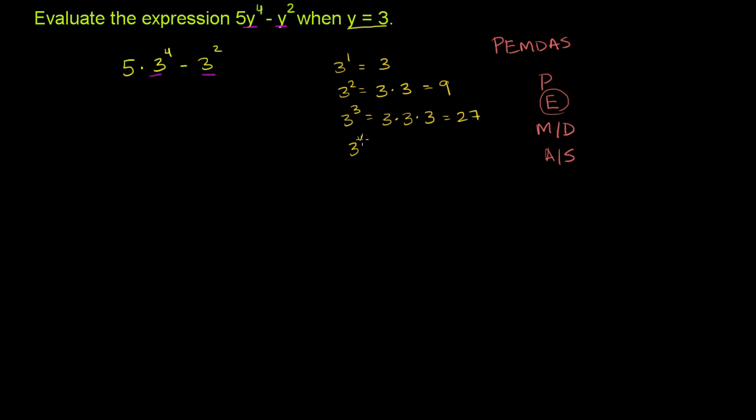3 to the fourth is equal to 3 times 3 times 3 times 3. So 3 times 3 is 9, so it's going to be the same thing as 9 times 9. So this is going to be equal to 81.